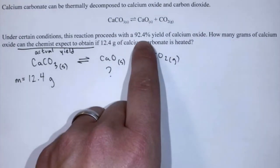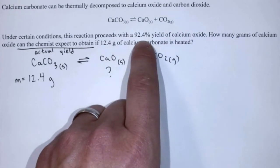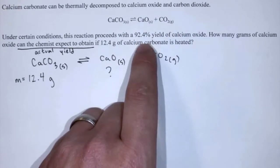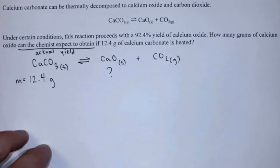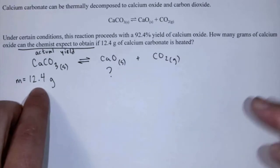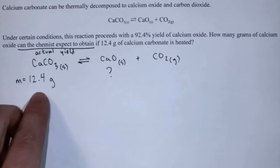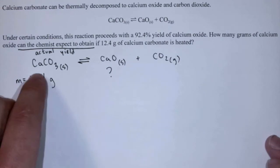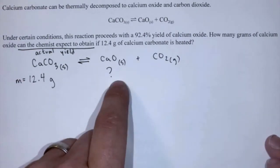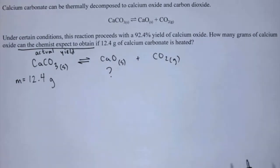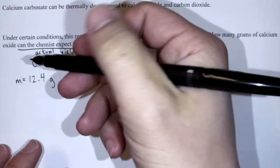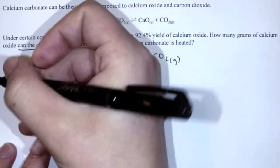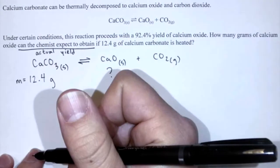Knowing that the reaction proceeds with a 92.4% yield, to figure this out we need to first determine the theoretical yield. So theoretically, with 12.4 grams of calcium carbonate, how much calcium oxide should we expect? Remember, with the theoretical yield we're assuming 100%.